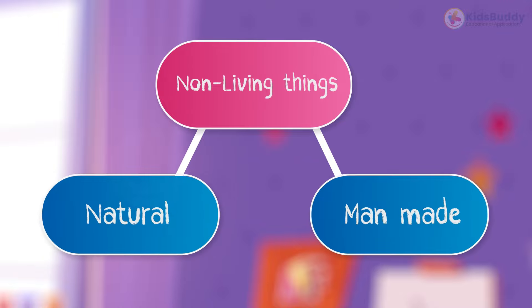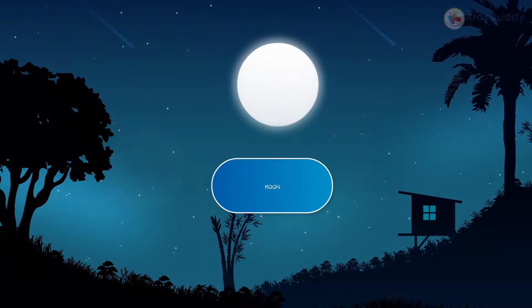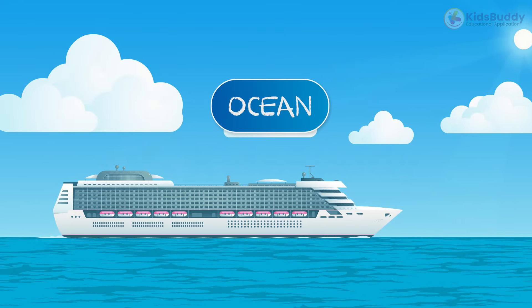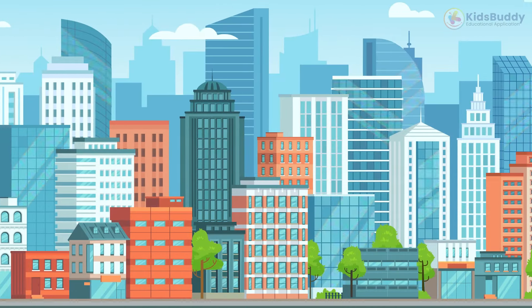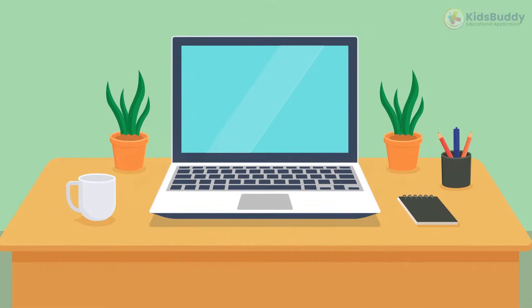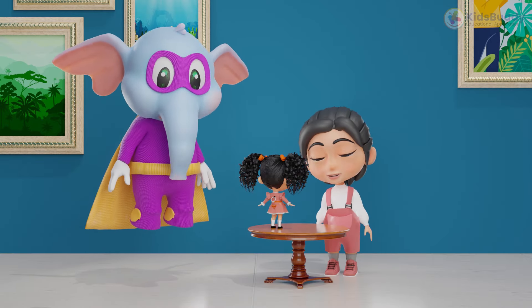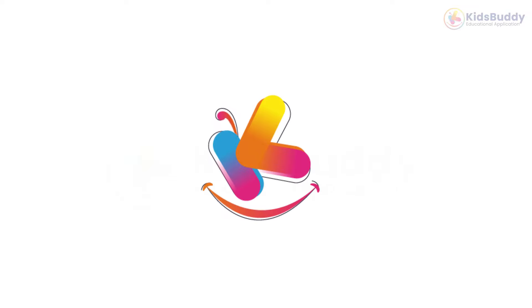These things are divided into two parts: natural and man-made. Some natural examples of non-living things are the wonderful sun, the shiny moon, the white clouds, the oceans, etc. Whereas man-made non-living things include tall buildings, machines, laptops, tables, etc. I hope you got an idea about living and non-living things.